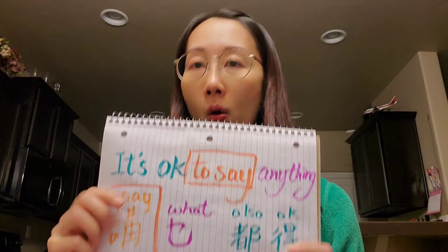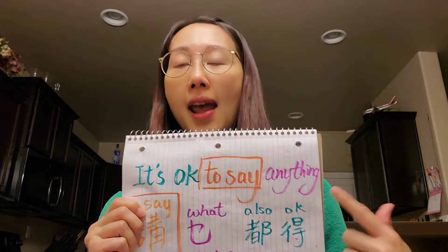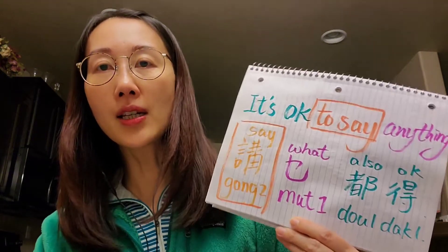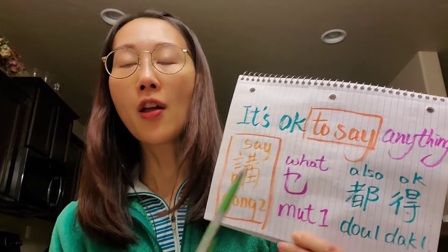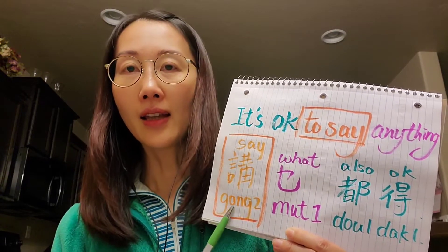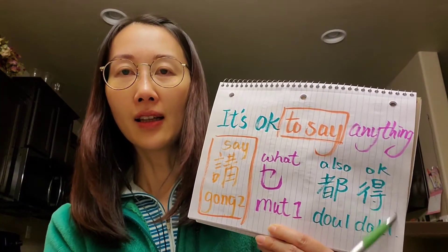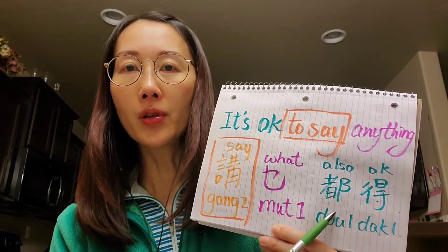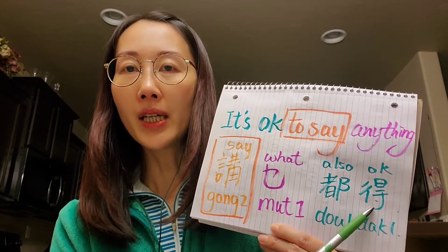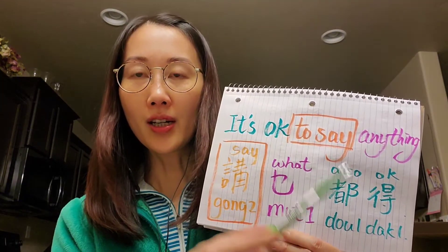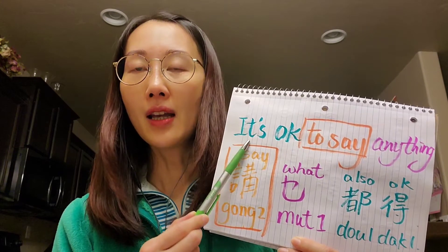Let's learn together. In Cantonese structure, we will put the verb first, and then we put a question word here, and then lastly we put 都得, which means 'also okay.'